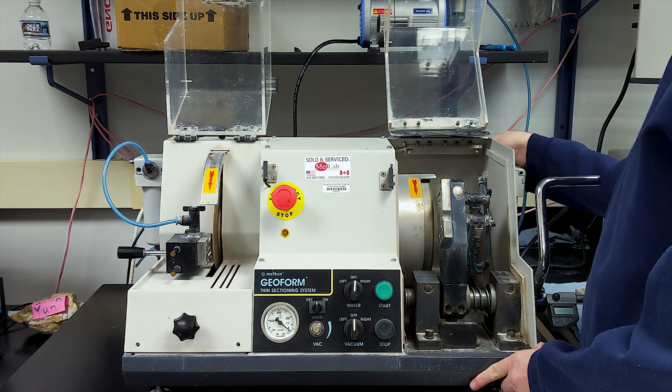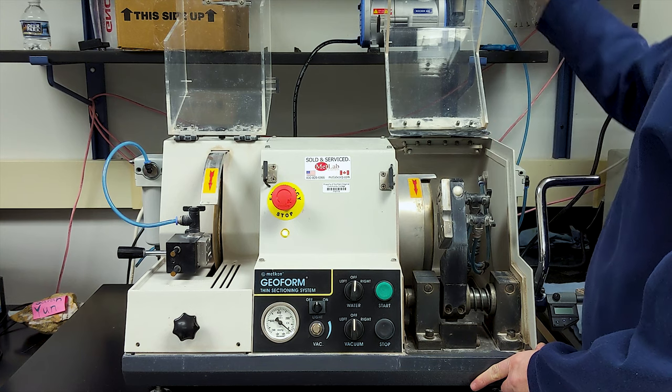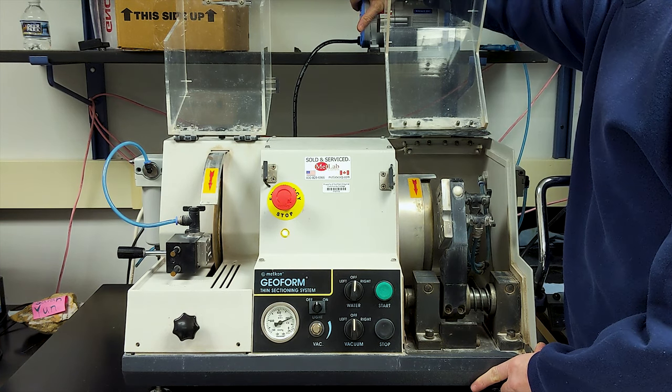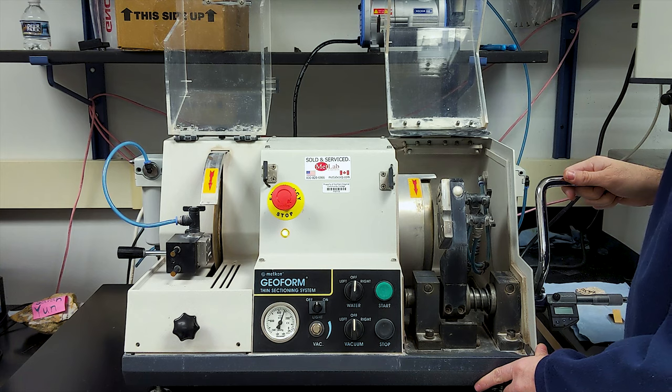To operate the GeoForm, the power switch, located along the right-hand side behind the grinding module, is flipped into the on position and the vacuum pump is also turned on.